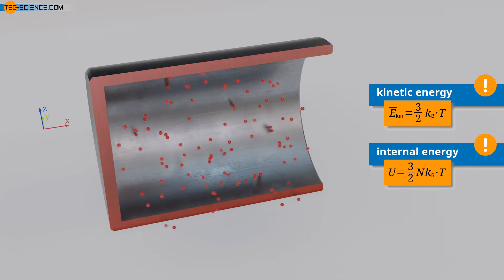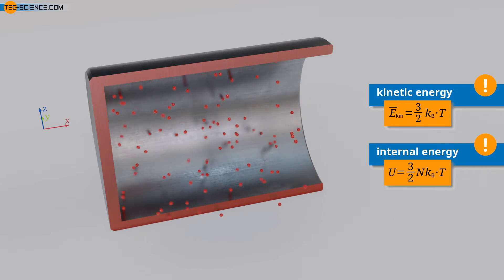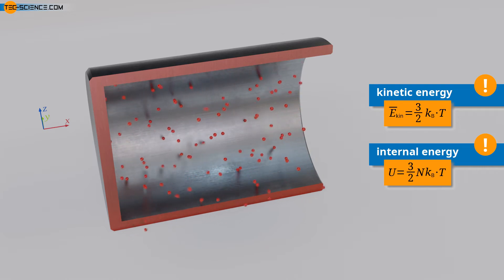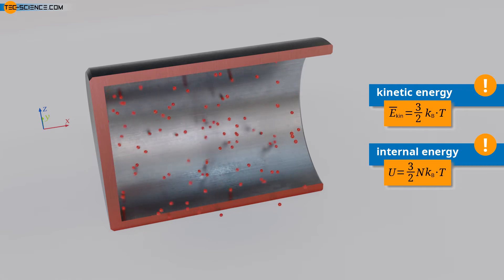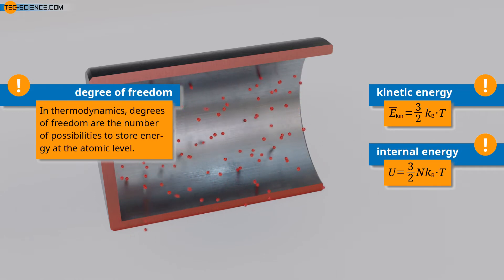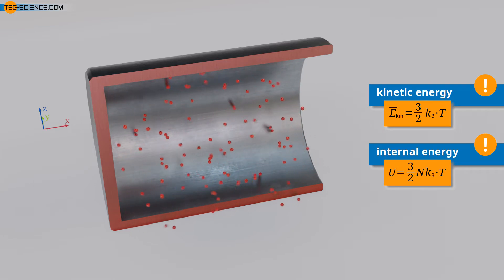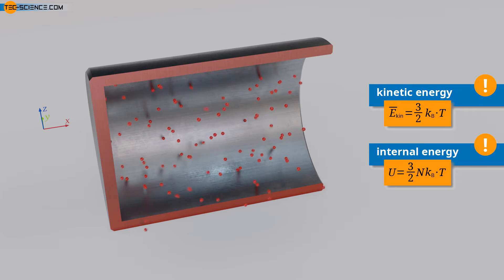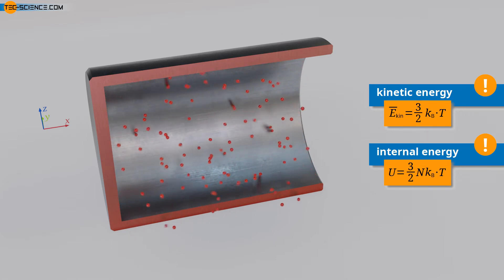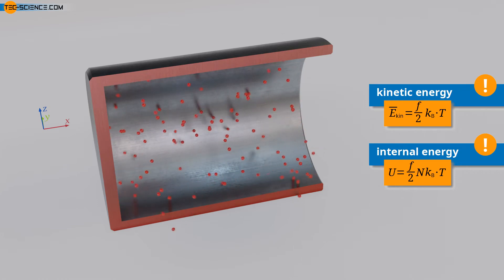The three spatial directions in which molecules of an ideal gas can move represent the possibilities the gas has to store energy. A molecule can store energy in motion in the x-direction as well as in the y or z-direction. These possibilities to store energy are called degrees of freedom. In thermodynamics, degrees of freedom are the number of possibilities to store energy at the atomic level. A molecule of an ideal gas has three degrees of freedom, one for each spatial direction. For each degree of freedom f, an energy of (1/2) k_B T is assigned per molecule, giving the gas an internal energy per degree of freedom of (1/2) N k_B T.